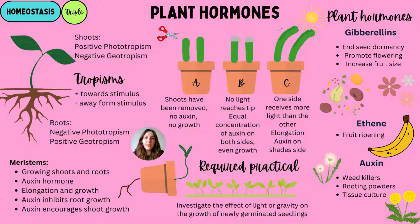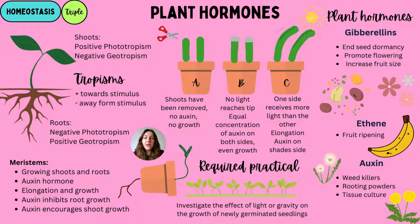In the roots and shoots, we have specialized growing structures called meristems — these are stem cells. At these points, a hormone called auxin is found in high concentrations. Auxin inhibits root growth but encourages shoot growth, promoting photosynthesis. In the required practical, you investigate the effects of light or gravity on newly germinated seedlings. In case A, the shoot tip is removed — no auxin, so no growth. In case B, the tip is covered with foil — equal auxin on both sides, so even growth.